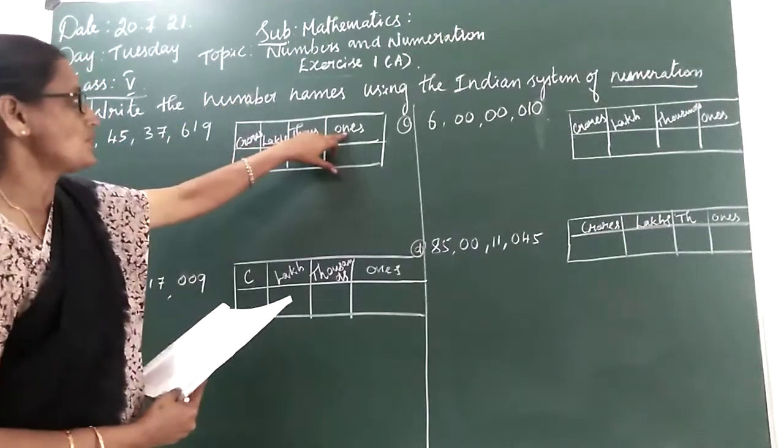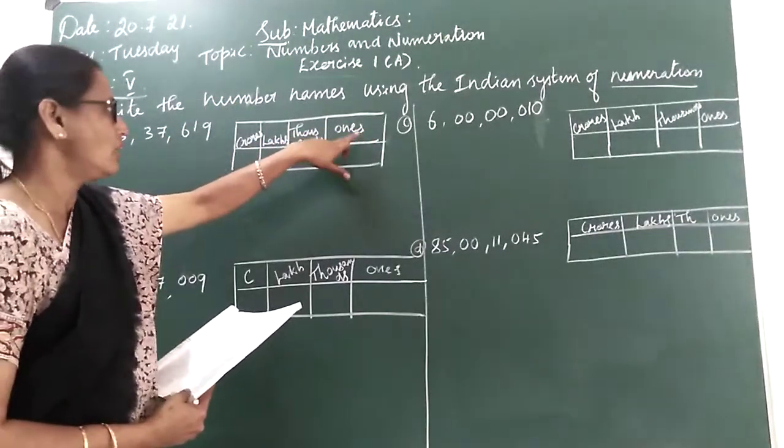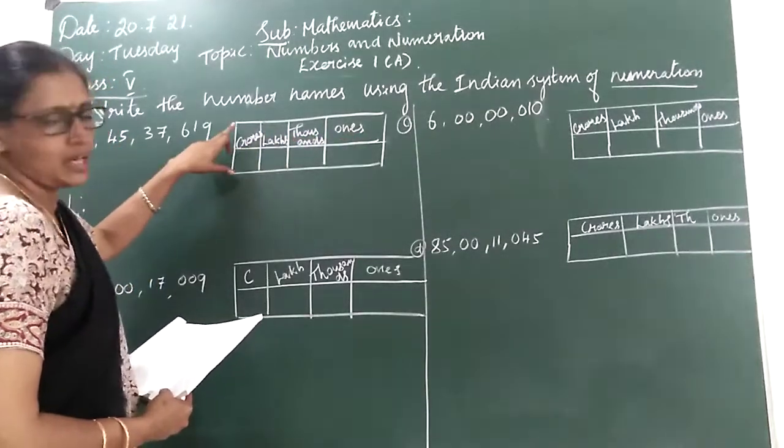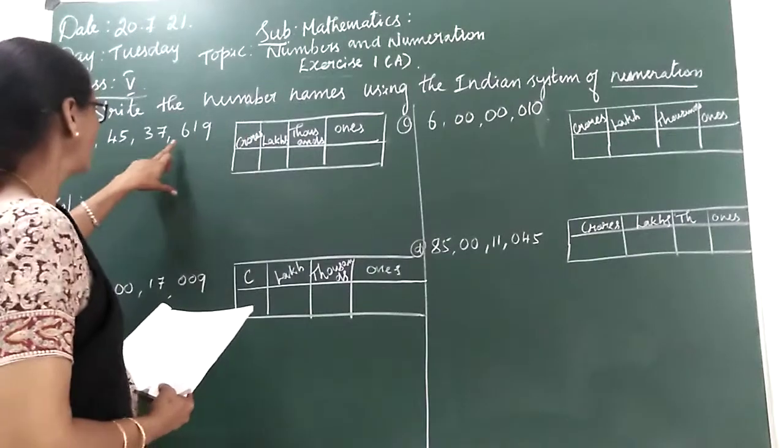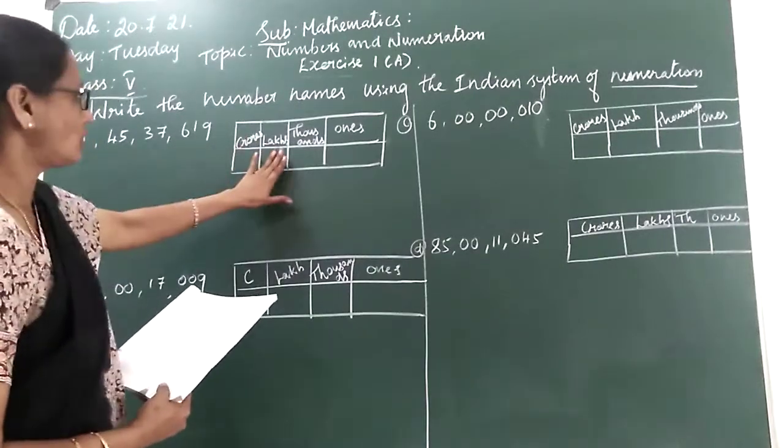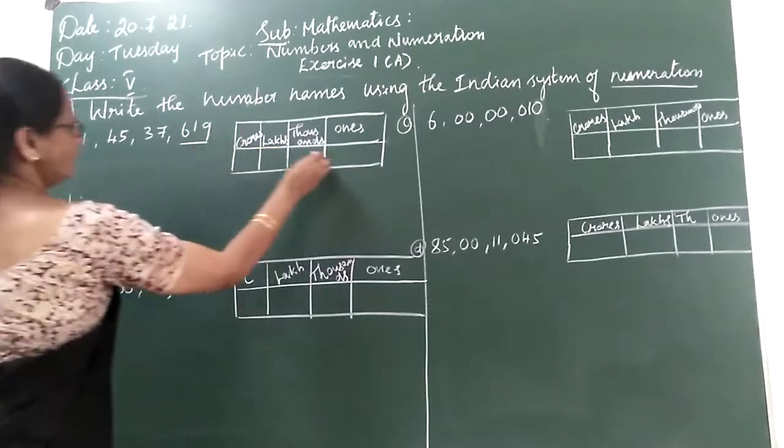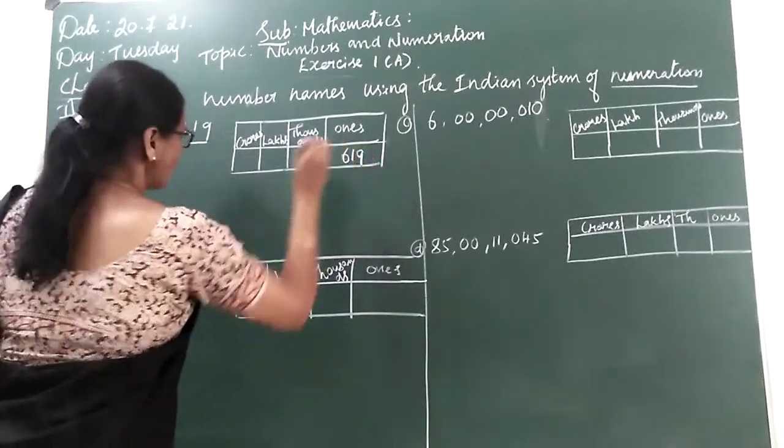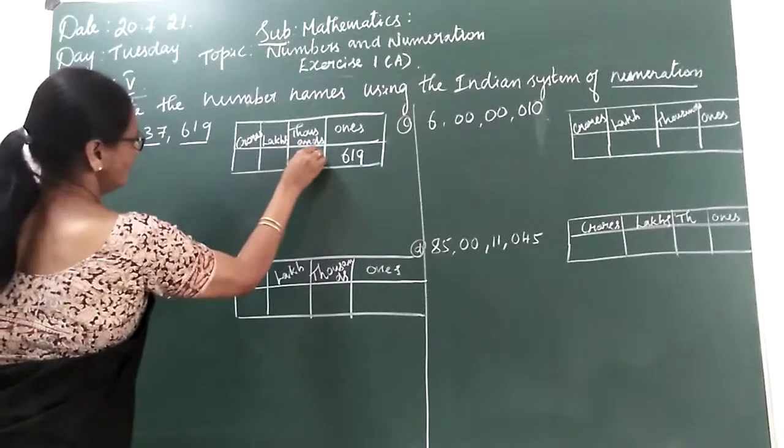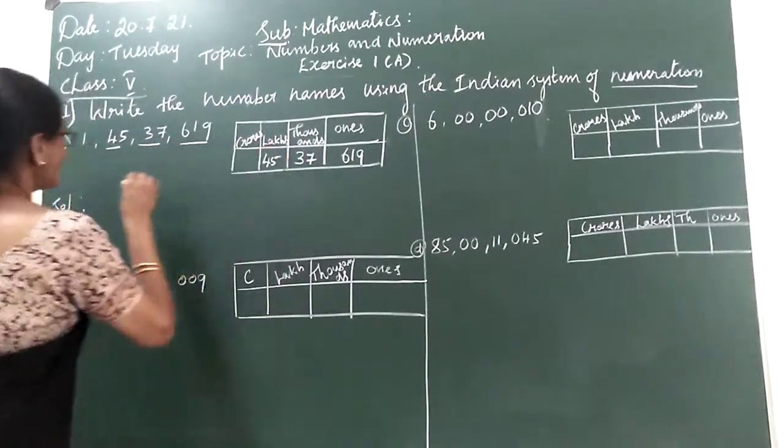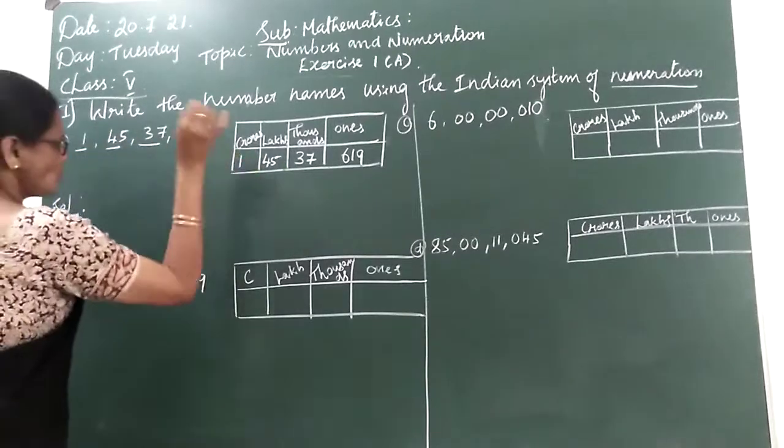So once we are writing period student here. First period, thousands period, lakhs period and crores period student. So here we have to enter the digits according to the period. So 619 in ones period, 37 in thousands period, 45 in lakhs period, 1 in crores period.